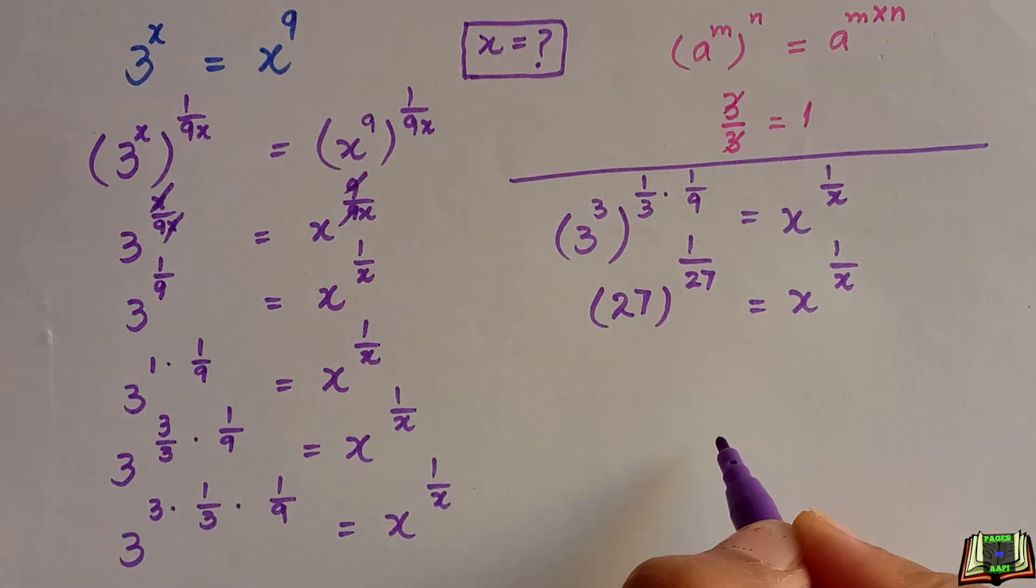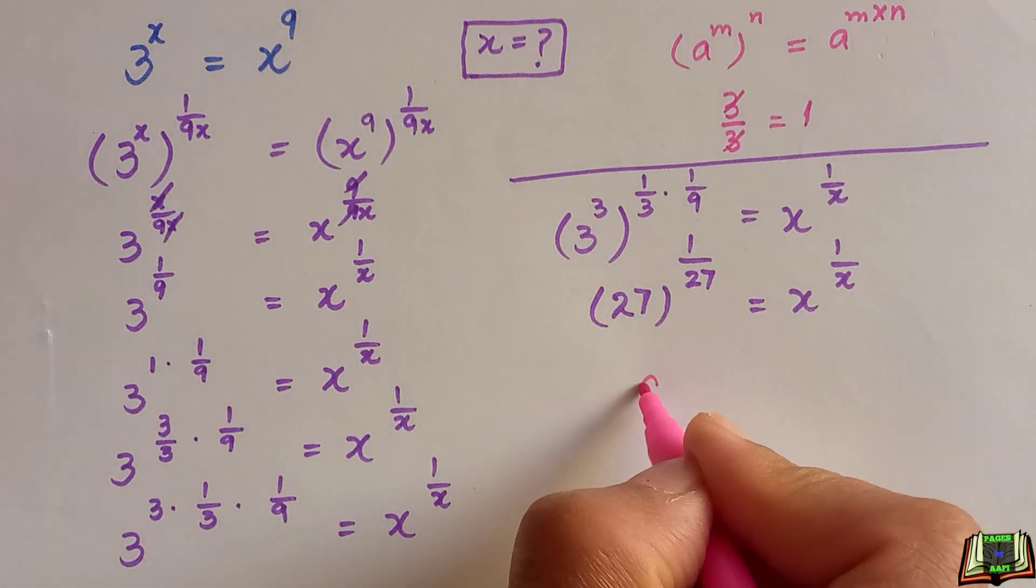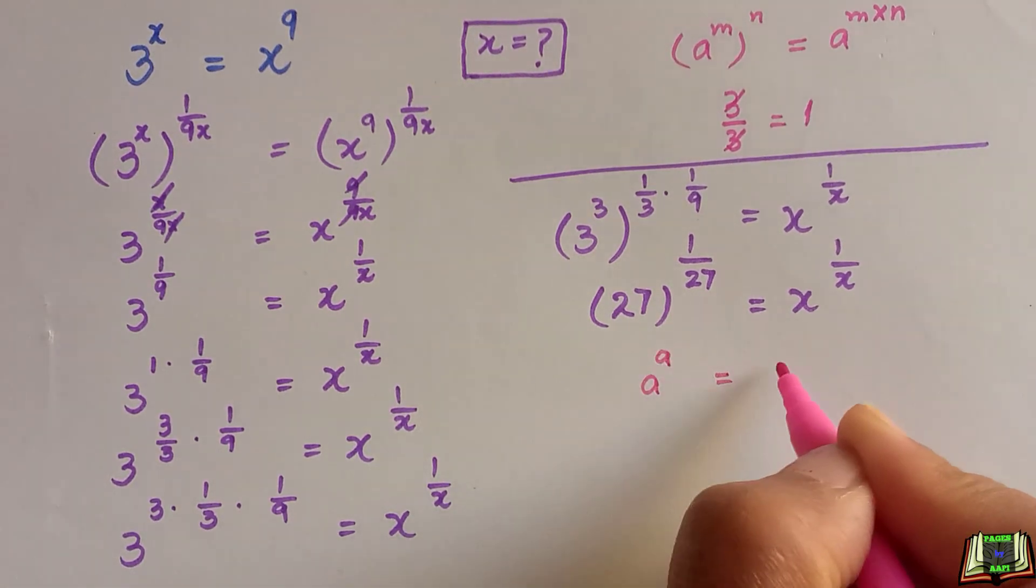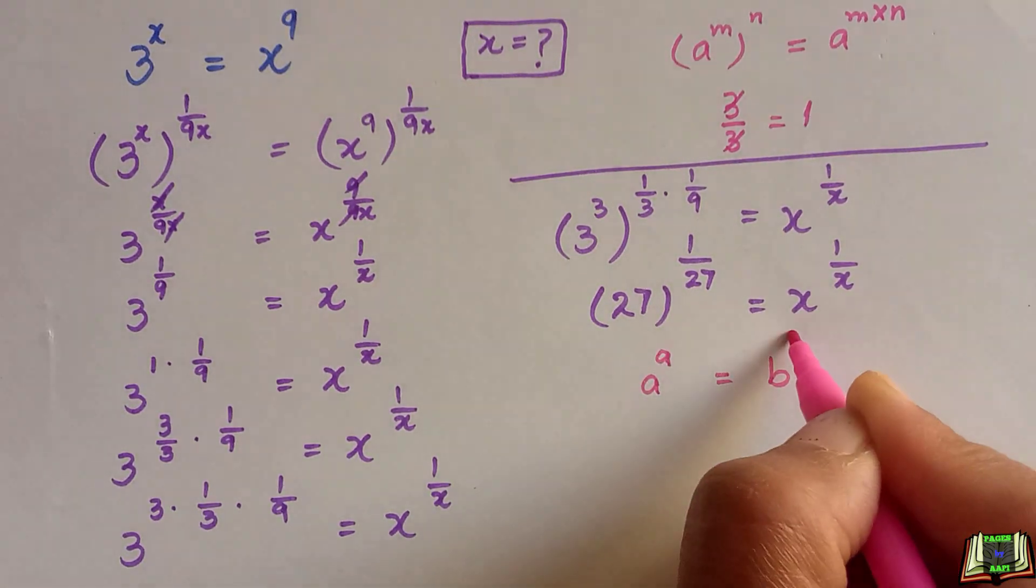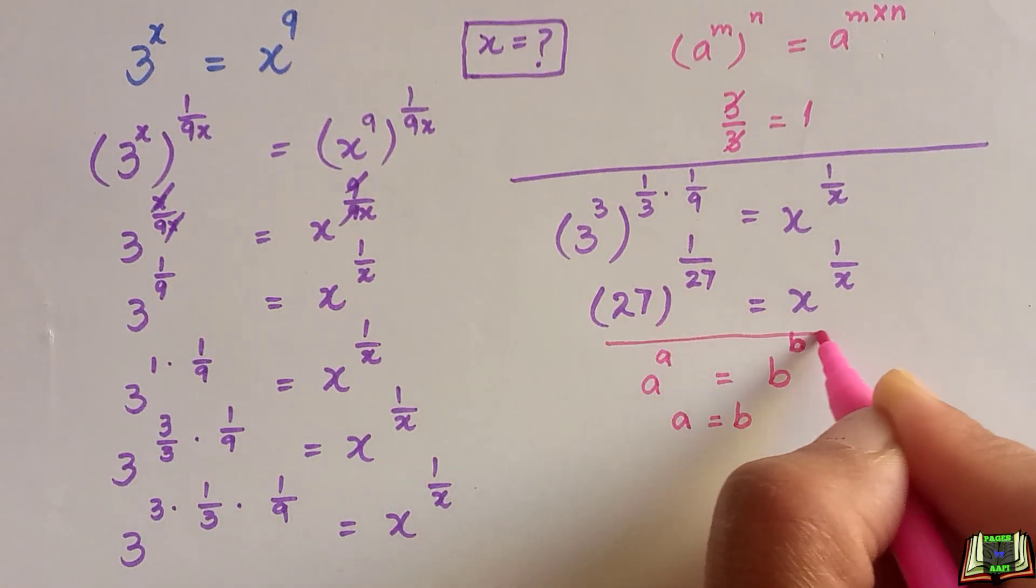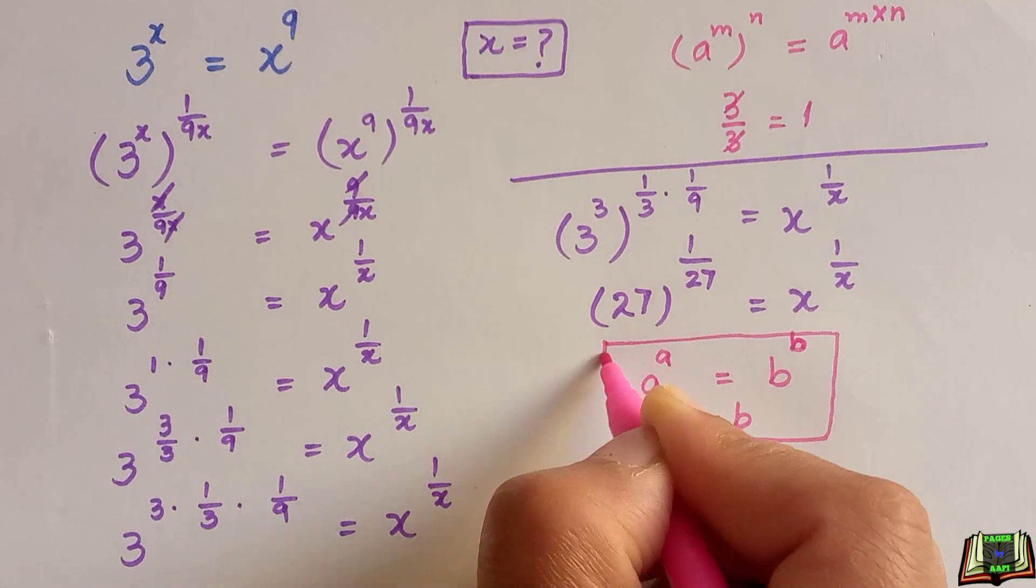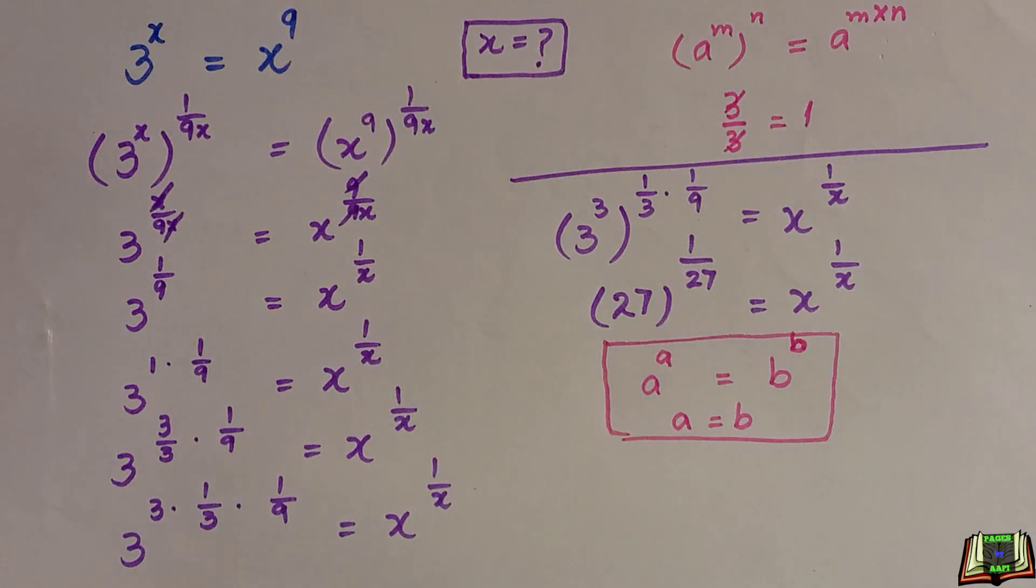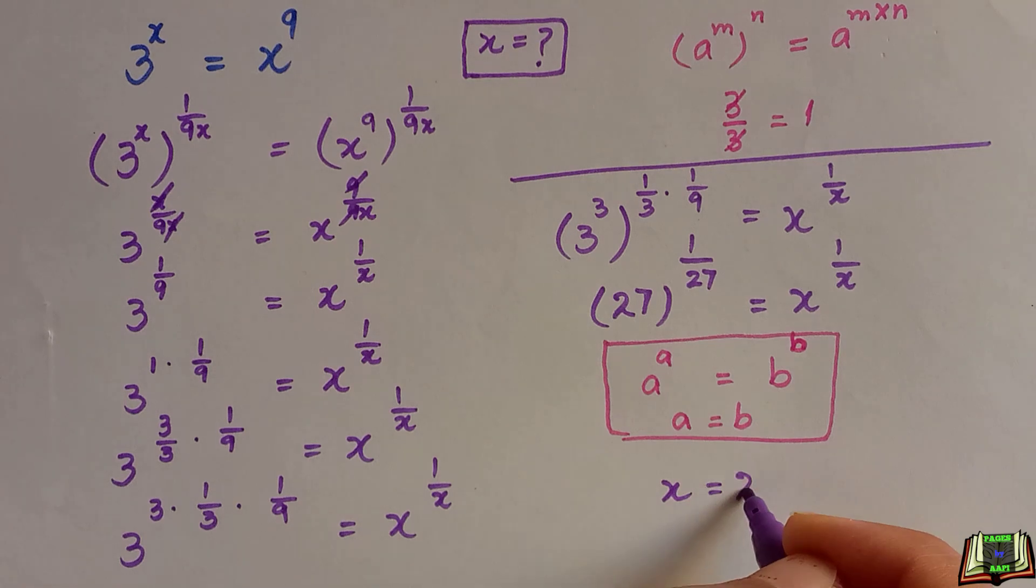There is another rule: if a raised to power a is equal to b raised to power b, then a is equal to b. We are going to use this rule to find out the value of x. According to this rule, we can see that x is equal to 27, which is the final and required value of x.